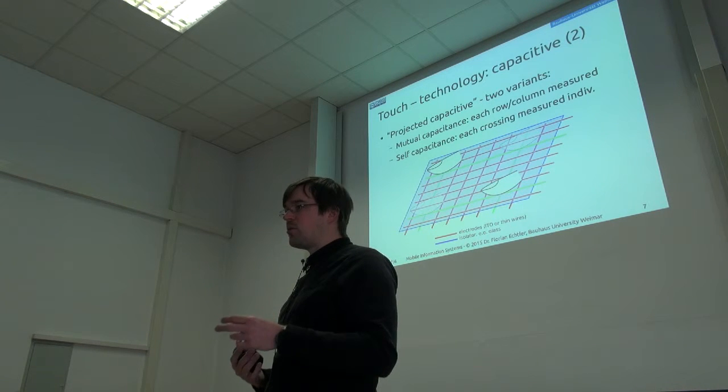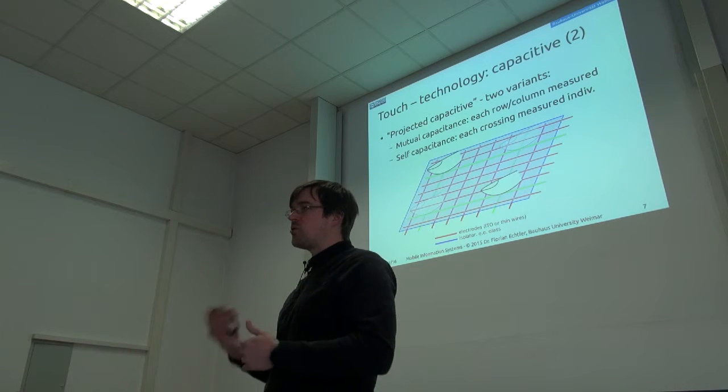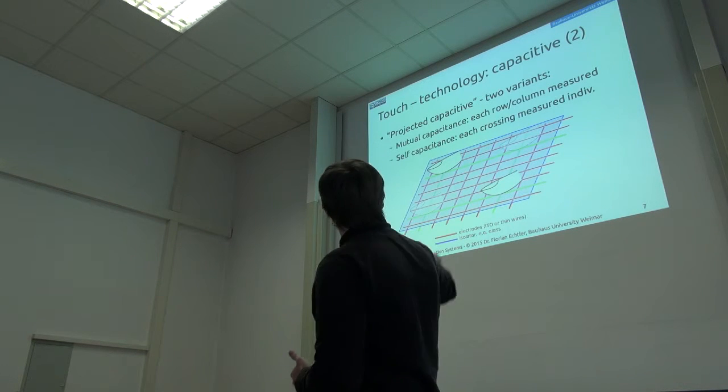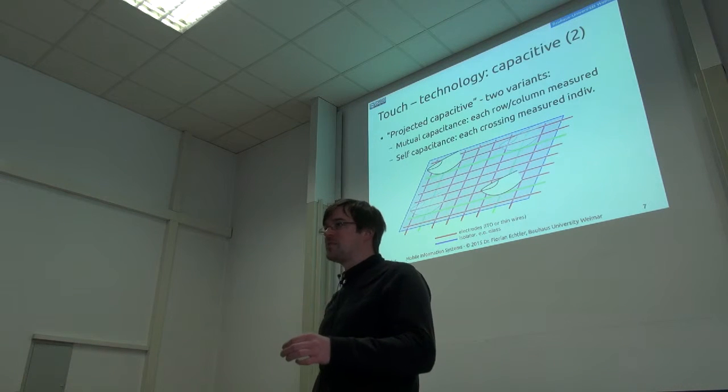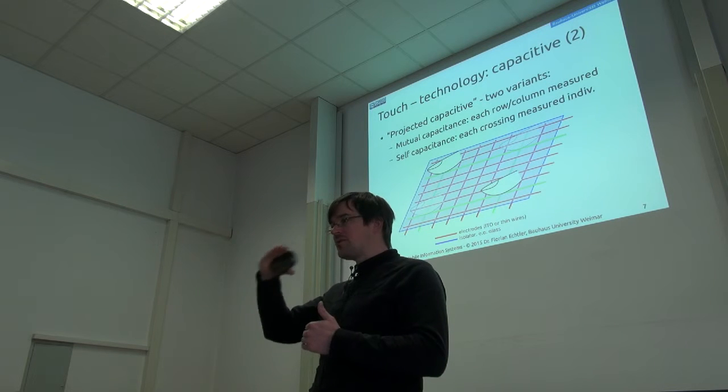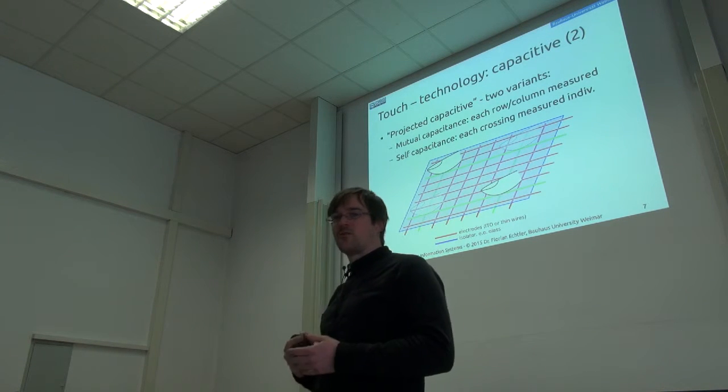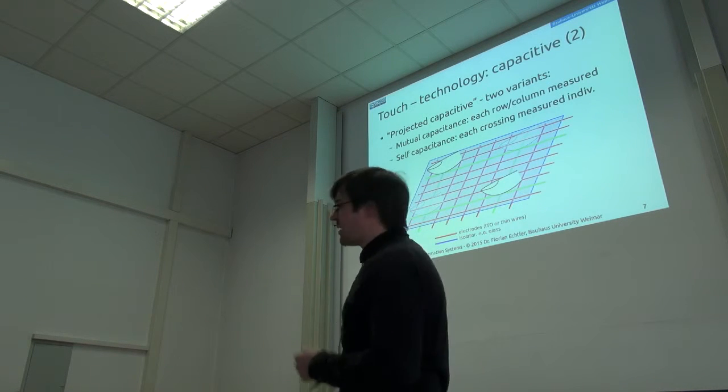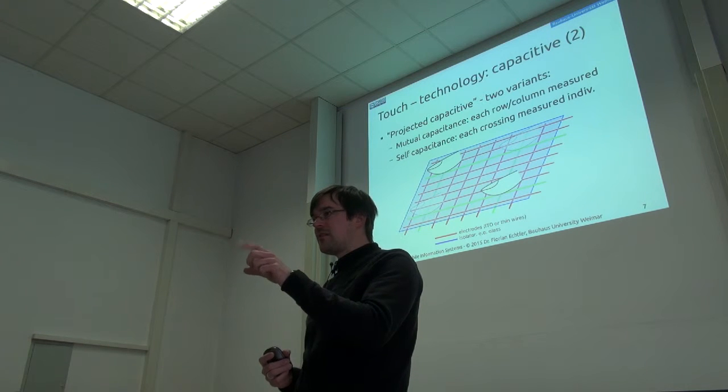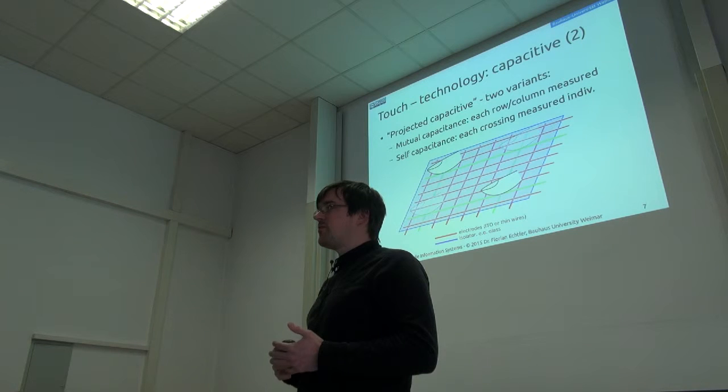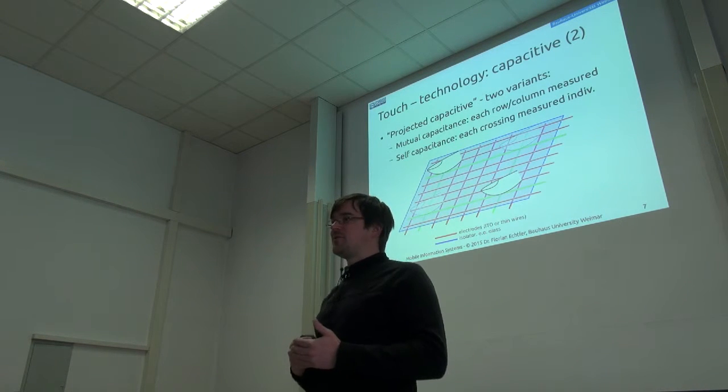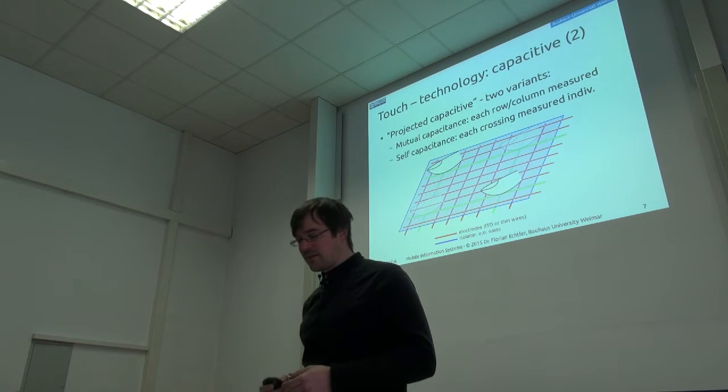But if you have a more expensive version, or even a more expensive controller, so the screen itself can stay more or less the same, just the controller has to be a little more advanced, then you can tell the difference between those. Because then each crossing point will create its own signal and then you can tell these two apart. But if you have the cheap touchscreen variant, which only measures each conductor across its entire length, then you get this kind of ambiguity between those configurations. For two points, it will still work because you can still zoom or rotate up to a point. But if you want something with more contact points, then this won't work anymore, the mutual capacitance variant. The self-capacitance variant doesn't have a problem with that.